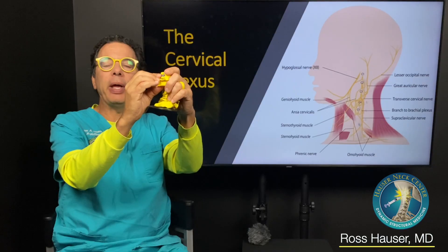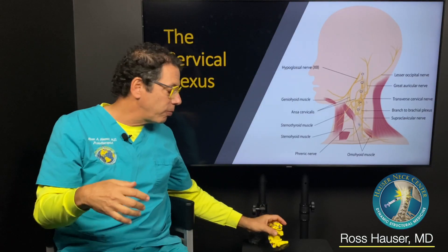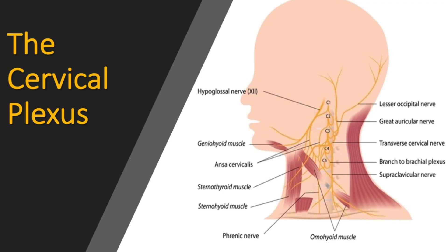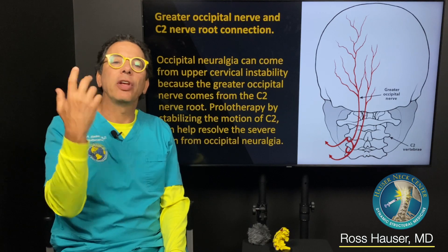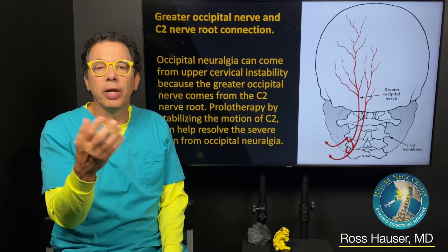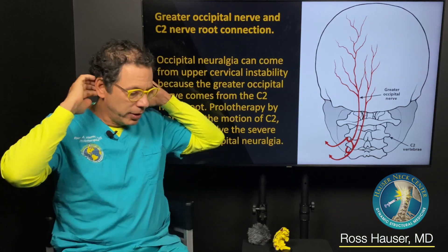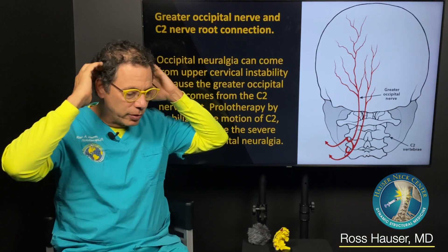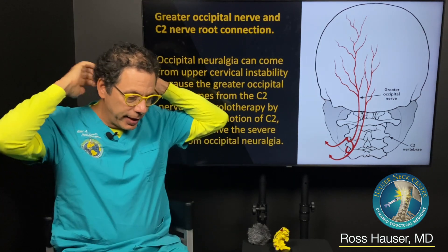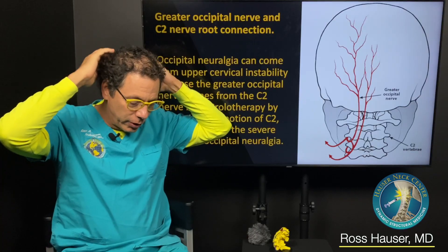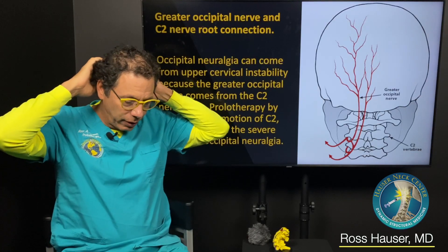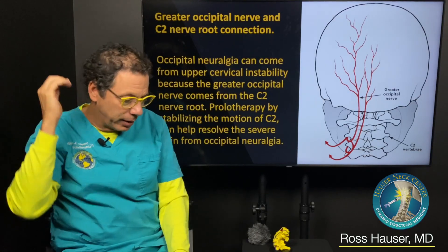So it goes into this space right here. If this space is narrowed because of problems in the neck curve, because of instability, the C2 nerve is continually going to be irritated and that's going to cause occipital neuralgia. There's the lesser occipital nerves on the side, the greater occipital nerves, and then there's the third occipital nerve in the midline.